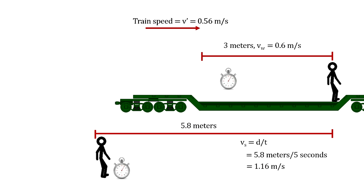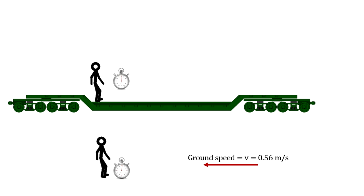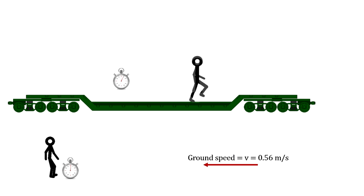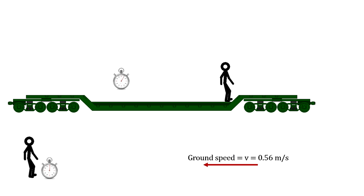Who is correct? Is he moving at 0.6 meters per second, or almost double that at 1.16 meters per second? In the old system before Galileo, you could argue the observer on the ground was correct. But in the actual world of equal reference frames, both are correct. In fact, we could have done it from the point of view of the train — in that case, it is the person on the ground moving at 0.56 meters per second to the left, instead of the train moving to the right.